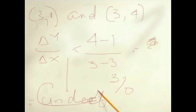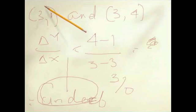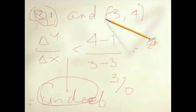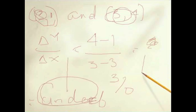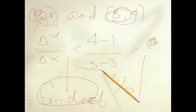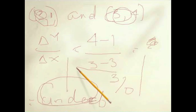That's the reason why you're getting undefined — when you find two points that lie on the same vertical line, the slope is undefined. Or it could be a horizontal line, which has no slope either.